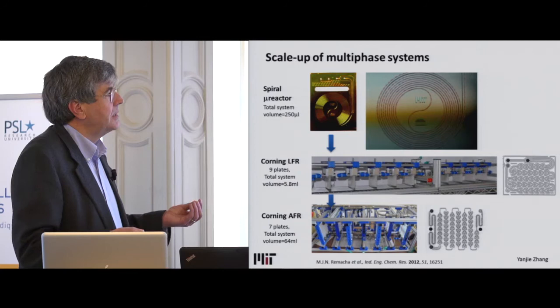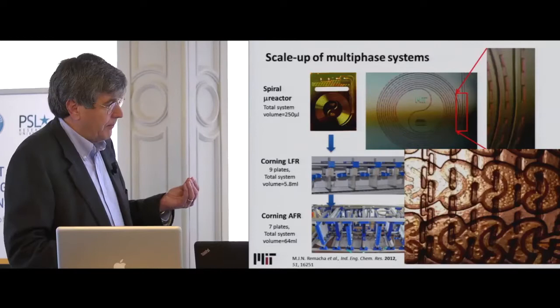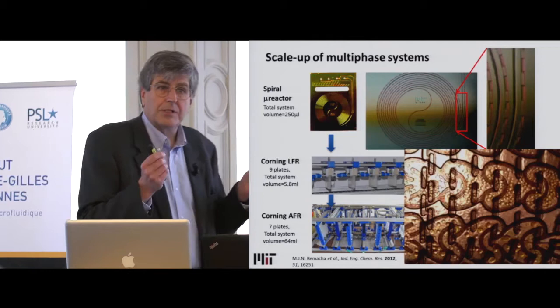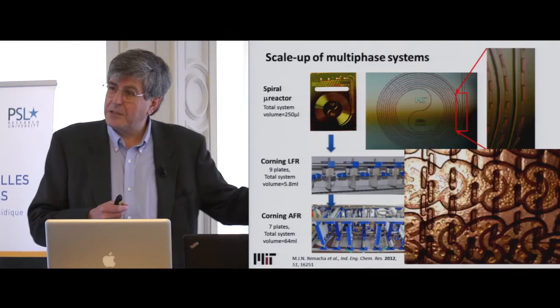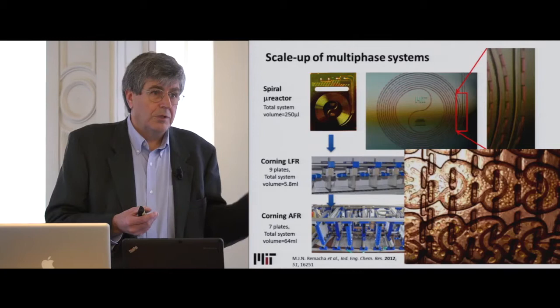In the Corning systems, when the fluid — hexane and water in this case — comes in, you break it up into droplets that continue to break up. At the end, when you get through the whole plate, you have very small droplets and very large interfaces, which enhances mass transfer. But the price you pay is that this fluid flow phenomenon only happens if you have sufficient velocity — you need enough inertia in the flow to get that phenomenon to happen.